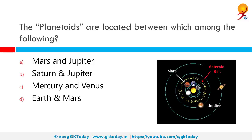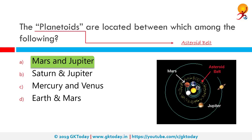The planetoids are located between which among the following? They are located between Mars and Jupiter — they are basically asteroids in the asteroid belt. Asteroids are also called inner solar system minor planets, neither categorized as a planet nor a comet, in direct orbit around the sun. They are also known as planetoids and range in size from hundreds of miles to a few feet. In our solar system, they are majorly found between Mars and Jupiter in the area known as the asteroid belt.